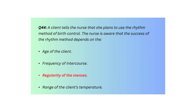Q44. A client tells the nurse that she plans to use the rhythm method of birth control. The nurse is aware that the success of the rhythm method depends on: the age of the client, frequency of intercourse, regularity of the menses, or range of the client's temperature.